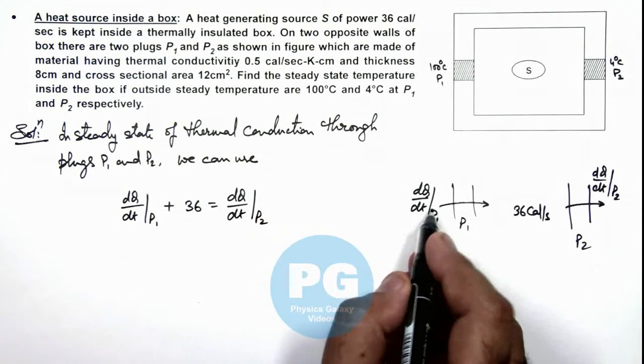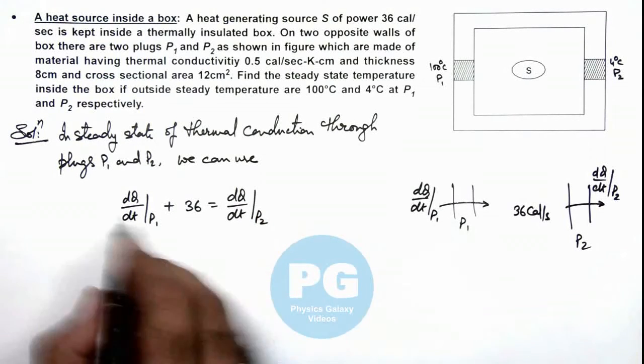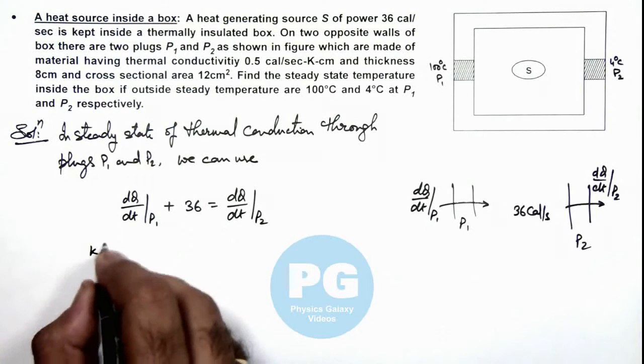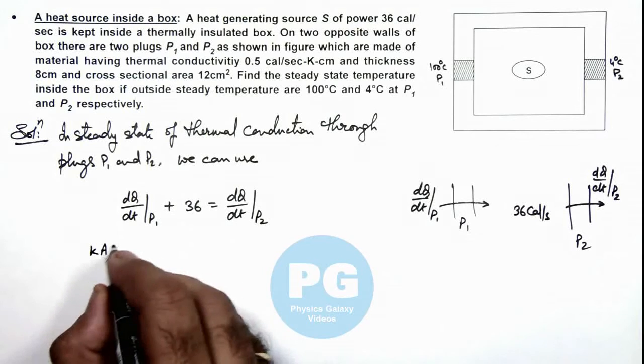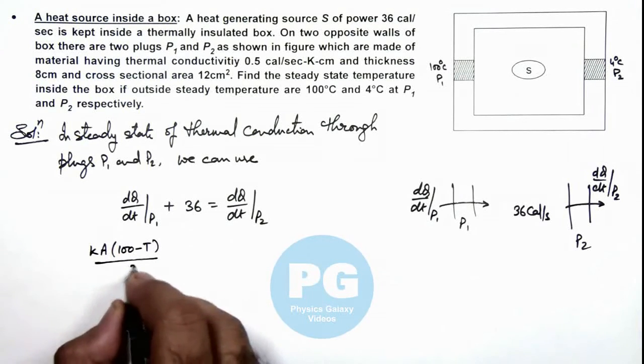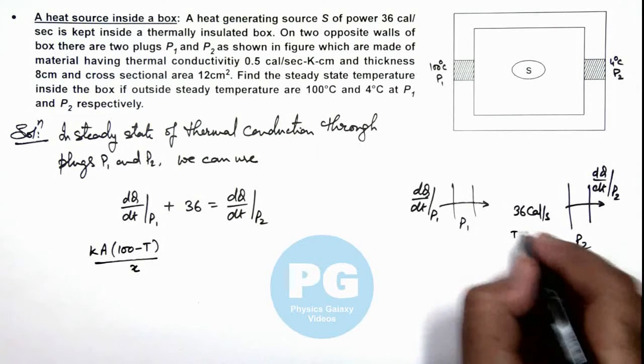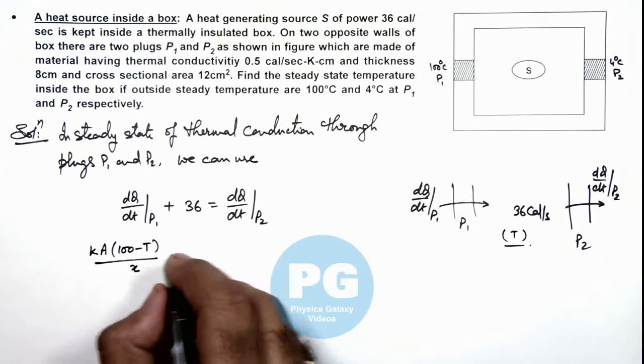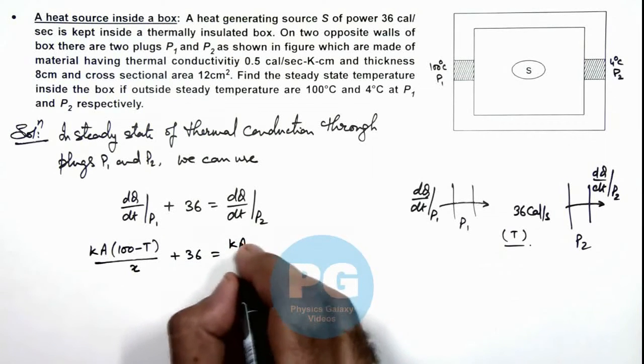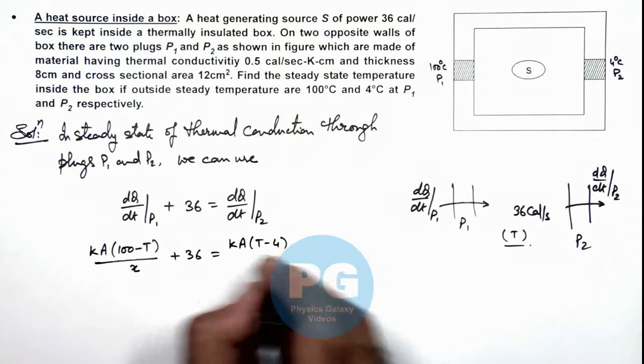If we just substitute the expression and values, dQ/dt this can be written as kA multiplied by 100 minus T divided by x. Here we are assuming T to be the inside temperature plus 36 is equal to kA times T minus 4 divided by x.